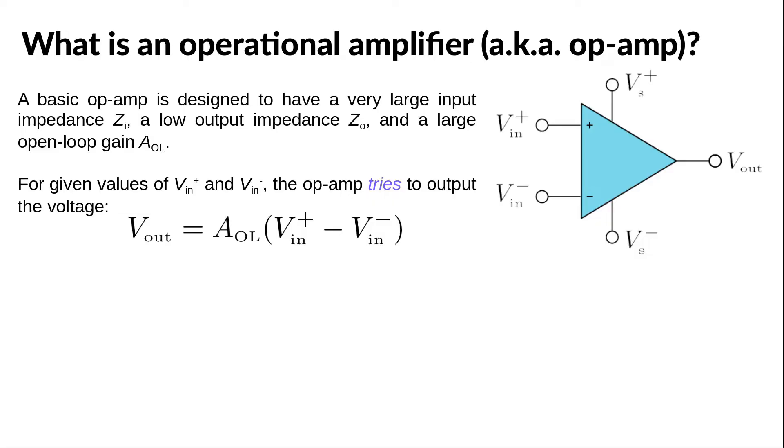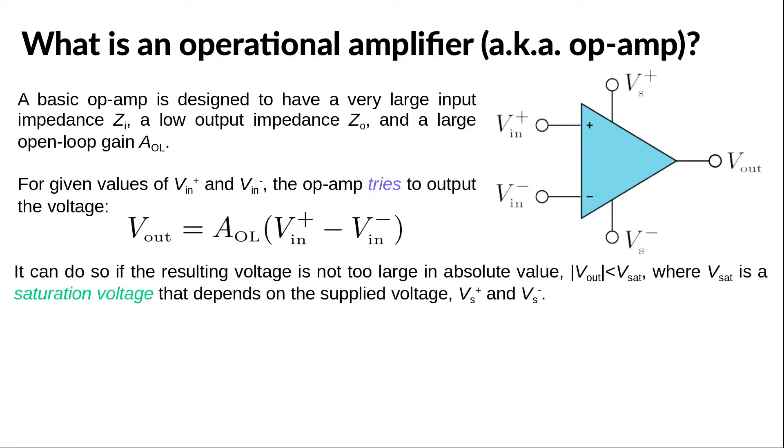That's why we say that the op-amp is a differential amplifier. It amplifies a difference in potentials. Now, what do I mean by it tries? I simply mean that it can do it only if the resulting output voltage is not too large.